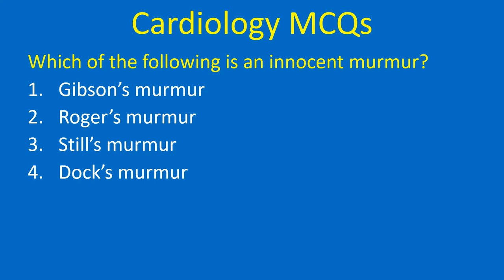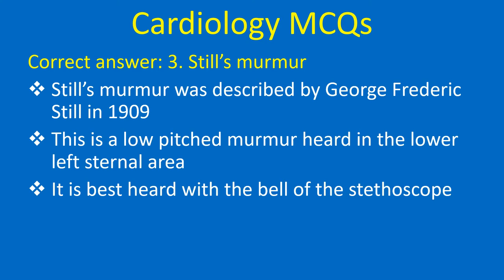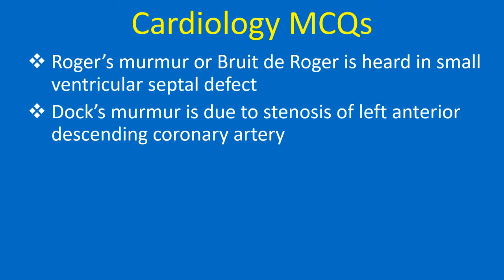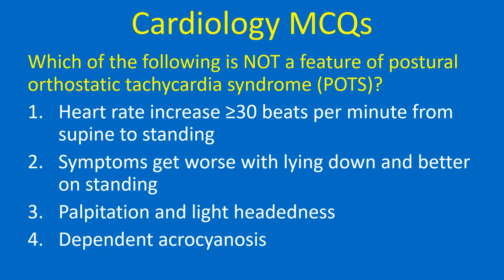Which of the following is an innocent murmur? 1. Gibson's murmur, 2. Roger's murmur, 3. Still's murmur, 4. Doc's murmur. Correct answer: 3. Still's murmur. Still's murmur was described by George Frederick Still in 1909. It is a low-pitched murmur heard in the lower left sternal area, best heard with the bell of the stethoscope. It is a mid-systolic murmur, loudest in supine position, diminishing on sitting and standing. Gibson's murmur is the train-in-tunnel murmur of patent ductus arteriosus. Roger's murmur is heard in small ventricular septal defect. Doc's murmur is due to stenosis of the left anterior descending coronary artery.